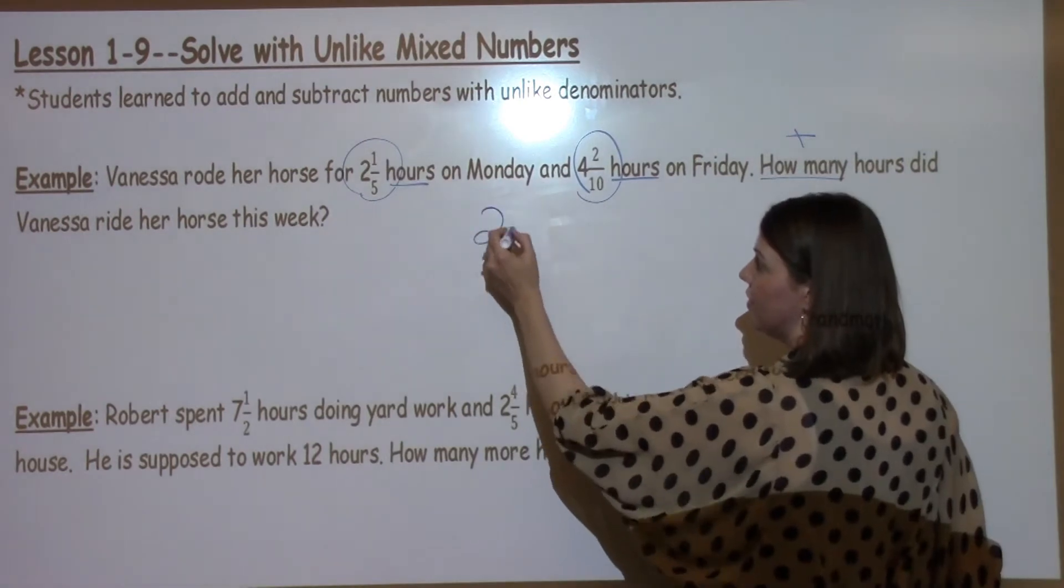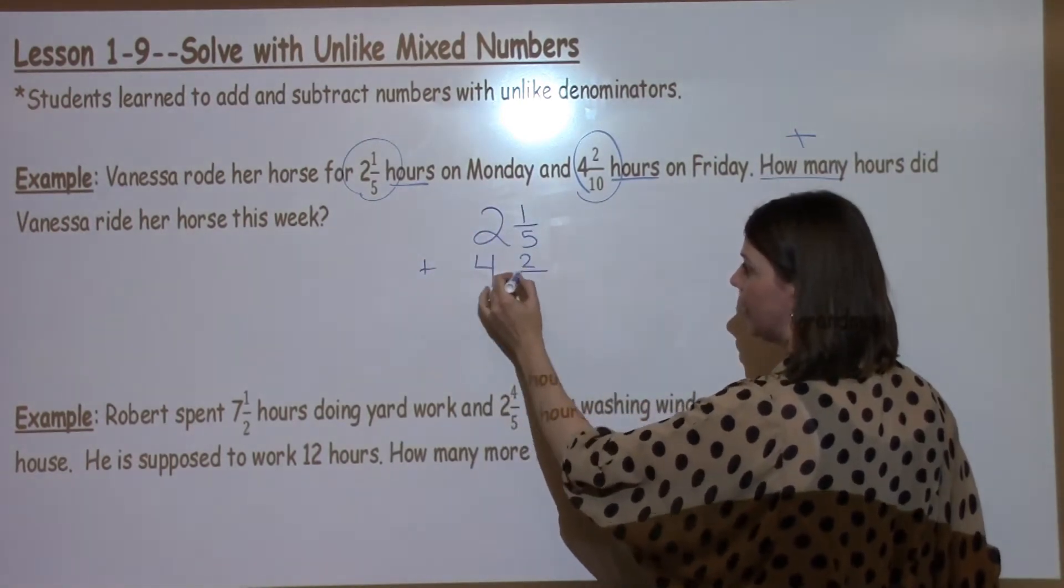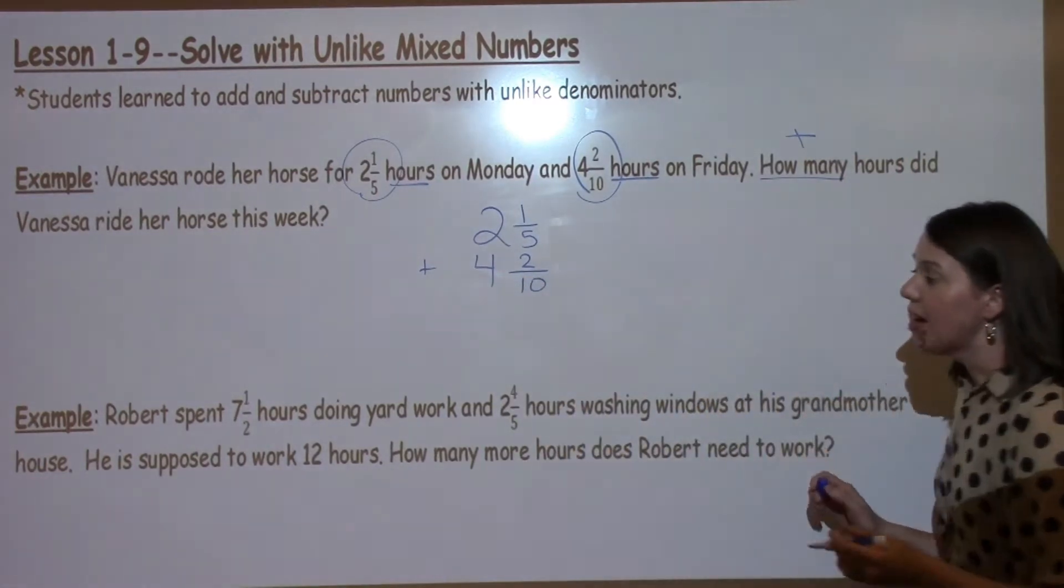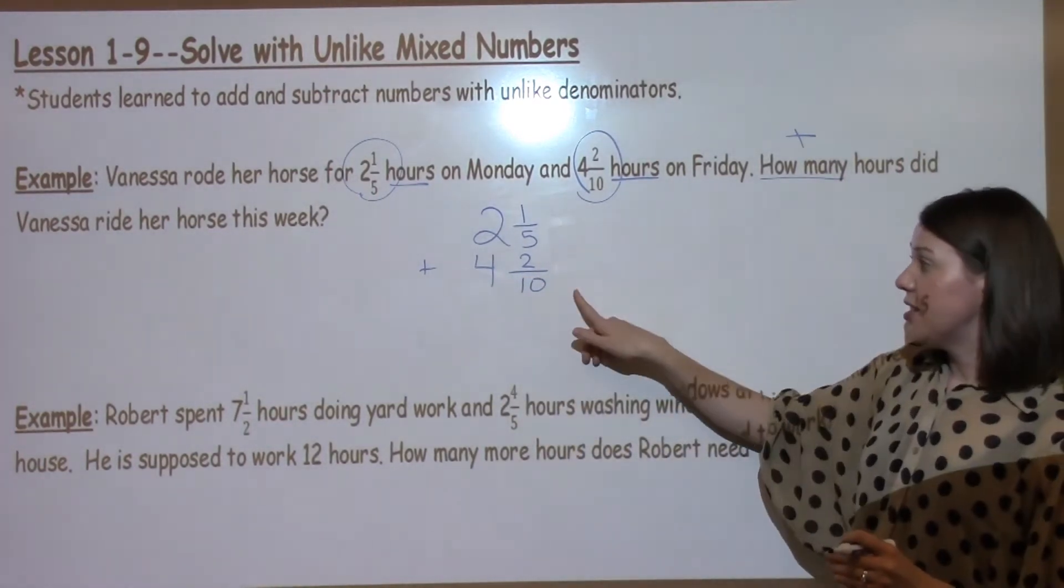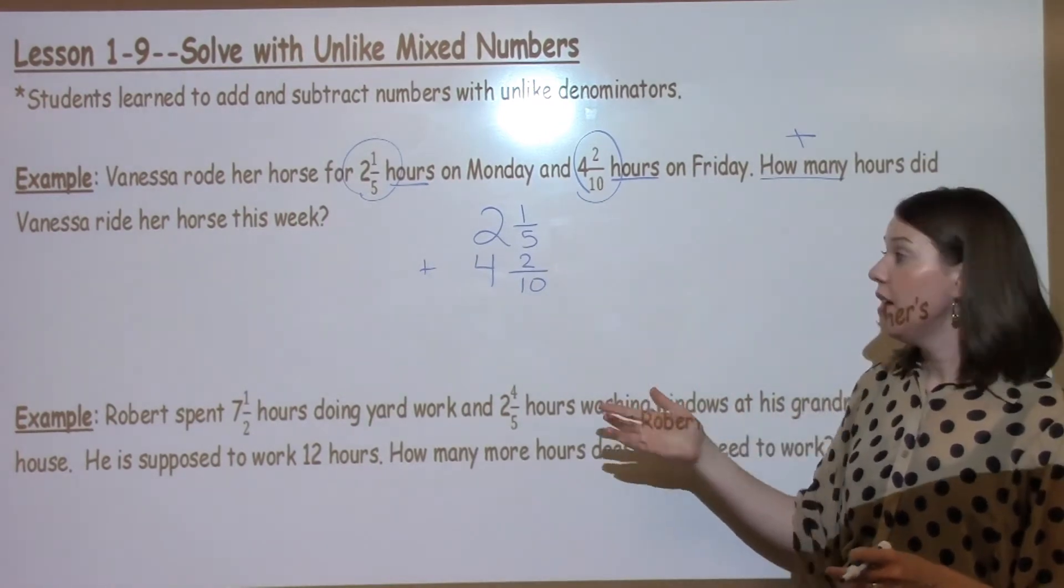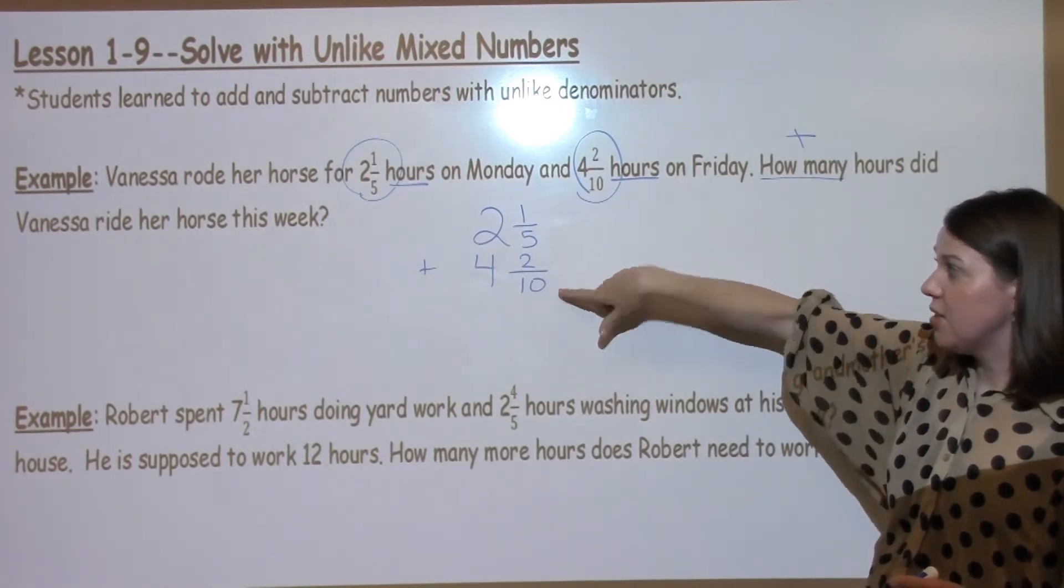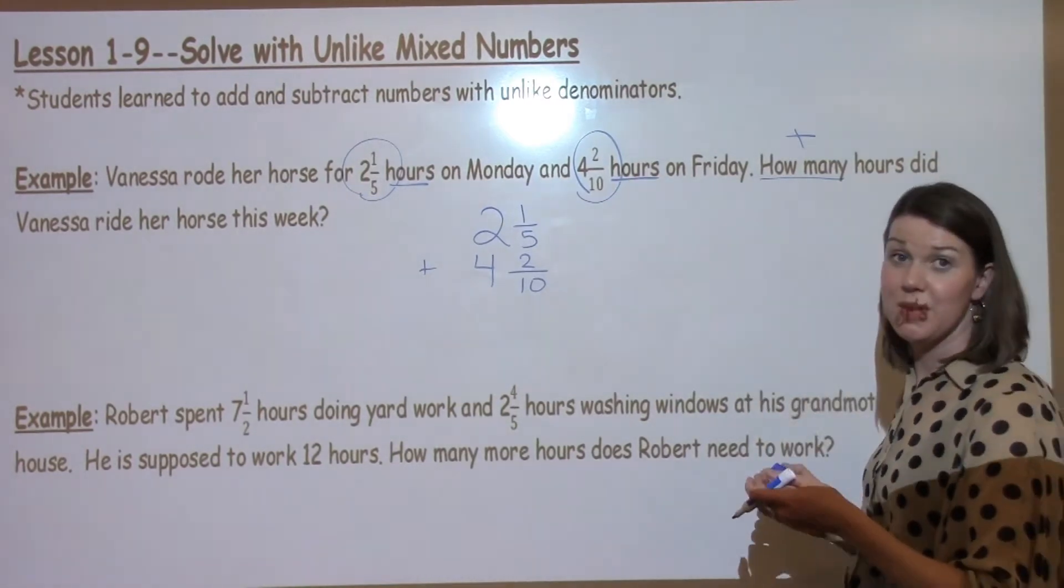So I'm going to take my 2 and 1 5th plus my 4 and 2 10th. We've talked about several different strategies for finding a common denominator. There's another strategy that we've talked about in 5th grade, which is called the shortcut method. You can look and see if the smaller fraction can equal the larger fraction. In this case, you can take 5 times 2, which gives me 10.